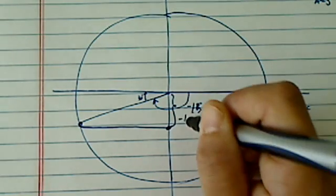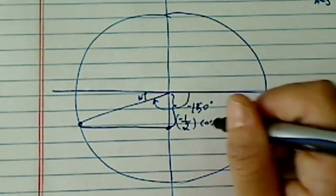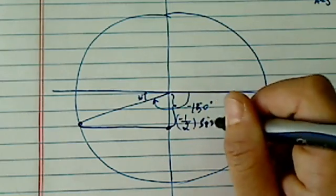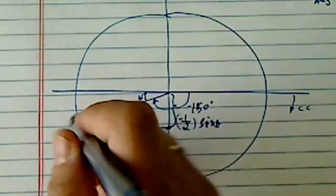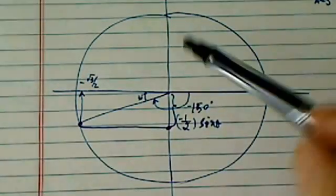The y value is minus half, which is our sine value, and then the x value here is minus radical 3 over 2. The trick you remember is,